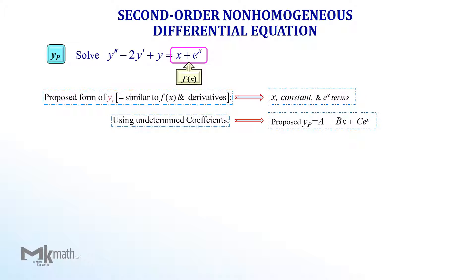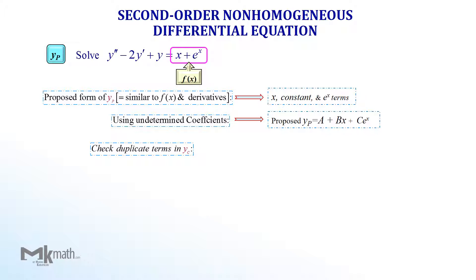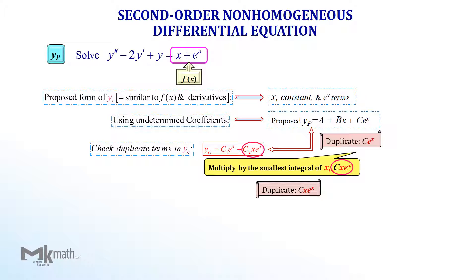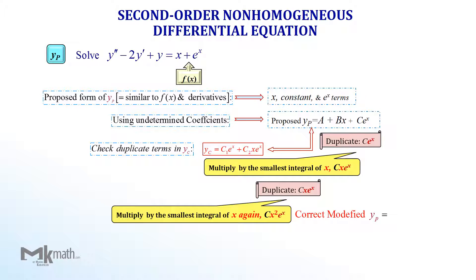A is some constant, bx is the x term, and the last term c·e^x has unknown coefficient c. At this point, we need to check if there are any duplicate terms with Yc. Comparing them, we can see the duplicate term e^x. To avoid duplicate terms, multiply by x to get cx·e^x as a new term. However, we can see another duplicate term x·e^x in Yc. So we need to multiply by another x again. Therefore, the correct modified Yp is a plus bx plus cx²·e^x.